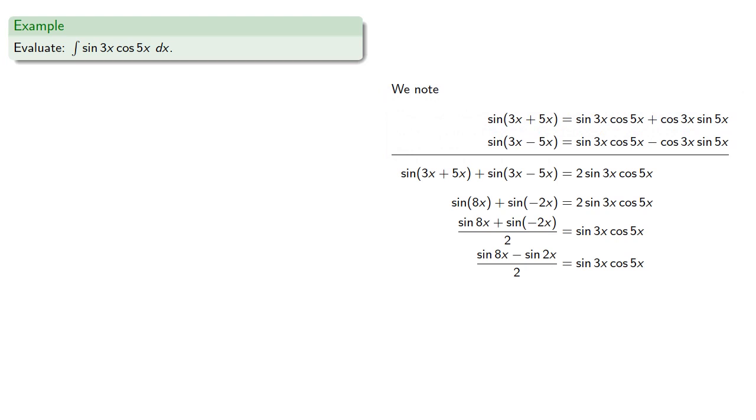So in this case, we can simplify trigonometrically sin 3x cos 5x as (sin 8x - sin 2x) divided by 2. We'll remove that common factor and we'll integrate the terms.